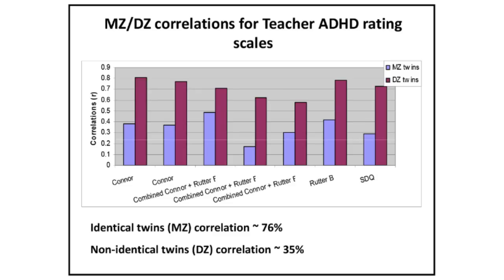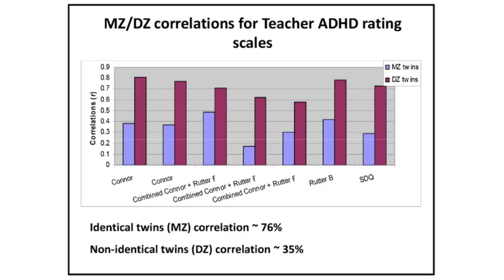These heritability studies look at correlations in the general population — not concordance rates for the clinical disorder — taking ADHD symptoms in a population sample and looking at correlations in identical and non-identical twins. The MZ twin correlations are remarkably reliable at around 76% from teacher ratings, with about half that for DZ twins, which is why you get these very high heritability estimates.